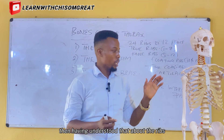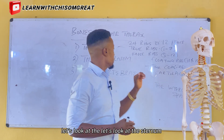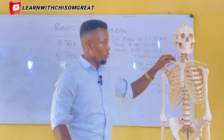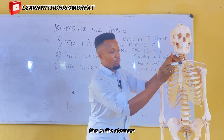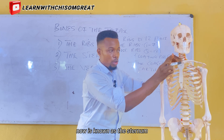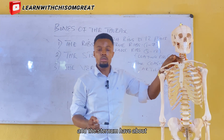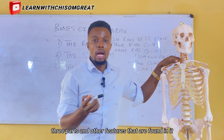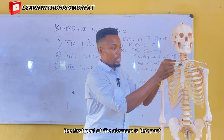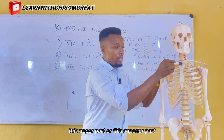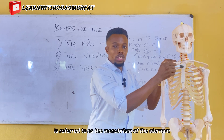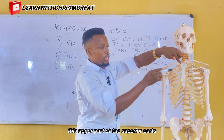Let's look at the sternum. This bone at the midline here is known as the sternum. The sternum has about three parts and other features. The first part — this upper or superior part — is referred to as the manubrium.